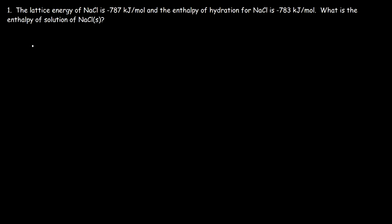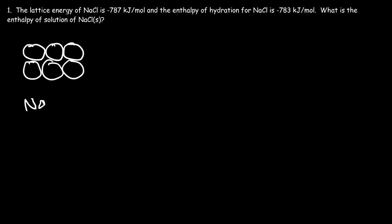So first, we're starting with solid sodium chloride. In this structure, all of the ions are very close to each other, so it's in a solid state. But it's composed of positive and negative charges. In order to dissolve sodium chloride, these ions must be separated from each other.